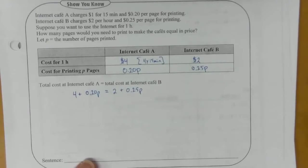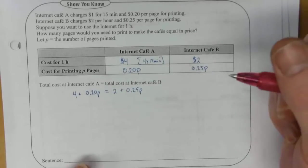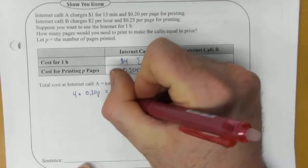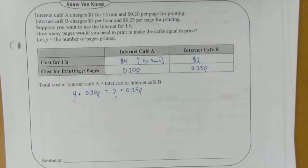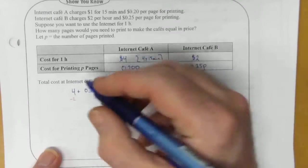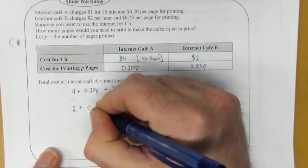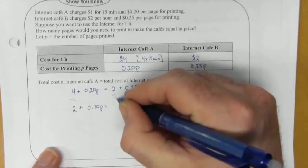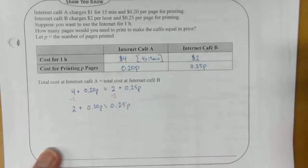So I'm going to subtract, I'm just going to deal with the integers first, the constants. I'm going to subtract two from both sides because that's one that I see very quickly is an easy one to deal with. Four minus two is two. These twos cancel out leaving me with 0.25P on the right.